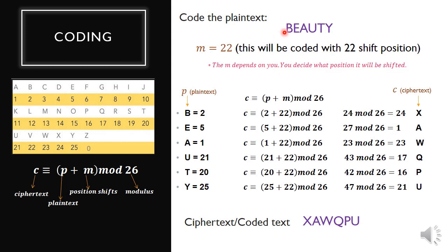This is an example of coding. Let us code the word 'beauty,' which is in plain text. Here M equals 22. This really depends upon you - you decide what position it will be shifted. First, we're going to write the word 'beauty,' and then let us give the numerical equivalent using the coding scheme. B is 2, E is 5, A is 1, U is 21, T is 20, and Y is 25.